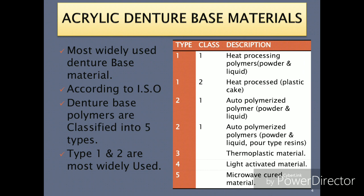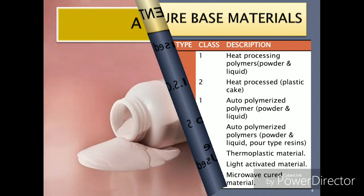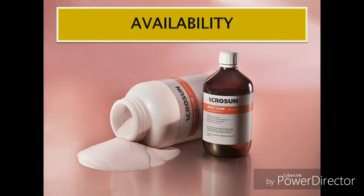Out of these five types, only type one and type two — which are heat-activated and auto-polymerizing acrylic resins — are most widely used as denture base materials. They are available in powder and liquid formulation, out of which the powder is polymethyl methacrylate polymer beads, whereas the liquid is methyl methacrylate monomer.